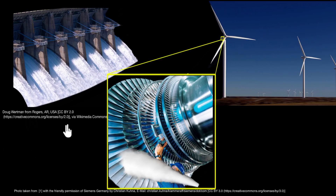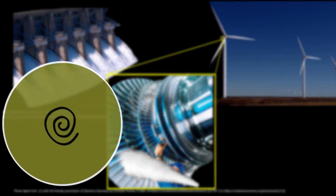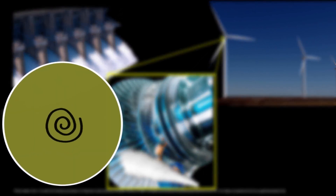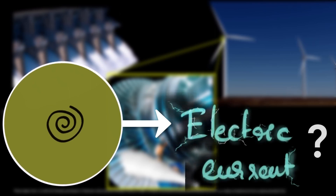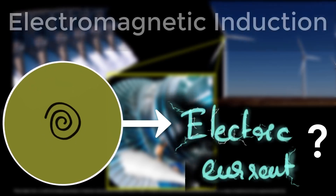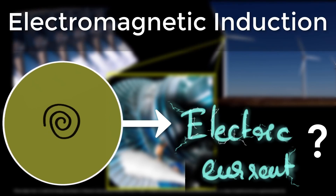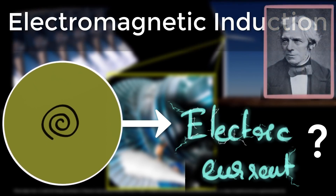Whichever way you choose, all we do is spin a giant turbine. But how does turning something create electricity? The technology is based on electromagnetic induction, discovered by Michael Faraday more than 200 years ago.